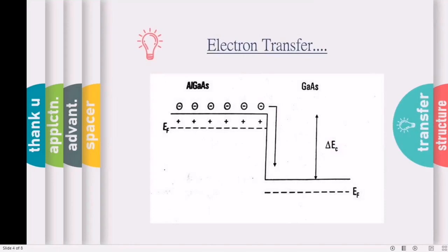The electrons are transferred from AlGaAs to GaAs due to the difference in electron affinity. So these electrons take part in the conduction process through the two-dimensional electron gas channel. Here also you can clearly see the difference in conduction energy levels, delta EC.